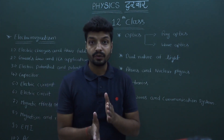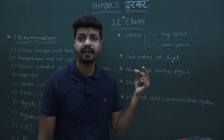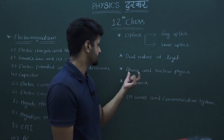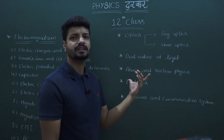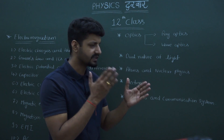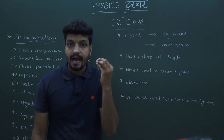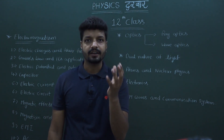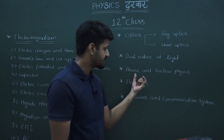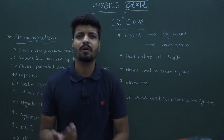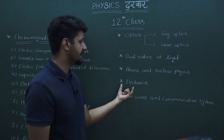Dual nature of light — light has a dual nature: particle nature and wave nature. Photoelectric effect, Einstein's Nobel Prize — why did Einstein get the Nobel Prize? That is dual nature of light. How did Einstein think, what did he do, and he won the Nobel Prize. Then atoms and nuclear physics — atom bomb, hydrogen bomb, nuclear reactor — all these things.